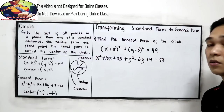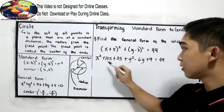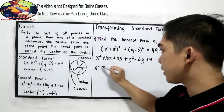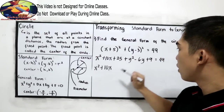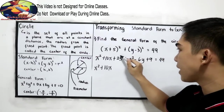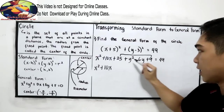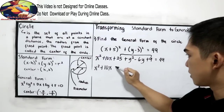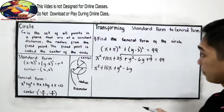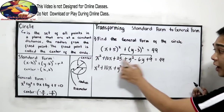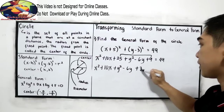Now combine like terms. So we have x squared plus 10x. We can combine 25 and 9 here — let's copy first: plus y squared minus 6y. Then 25 plus 9 gives us 34, is equal to 49.